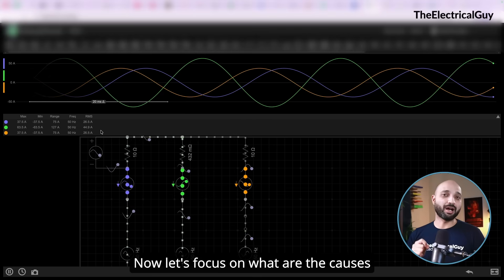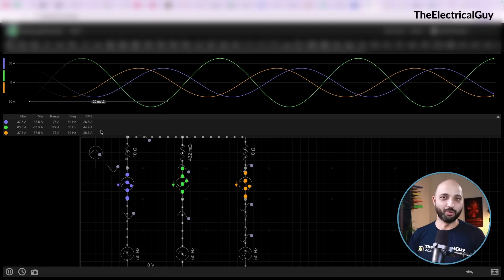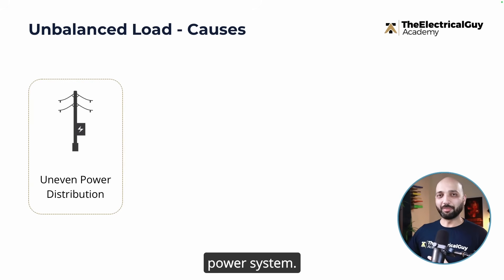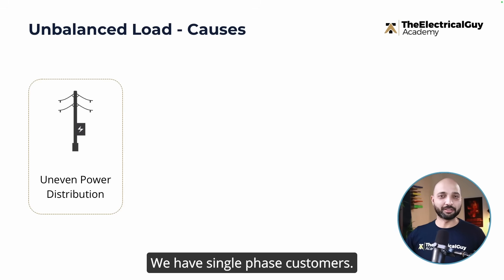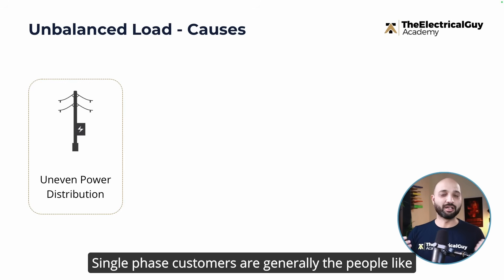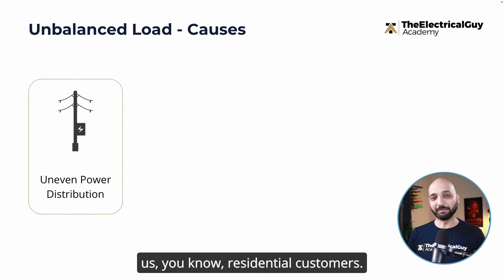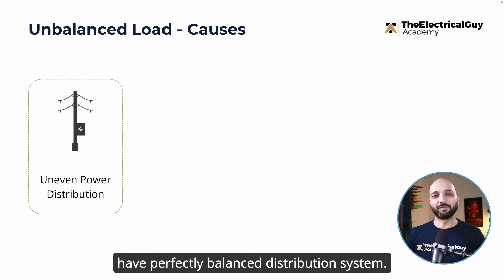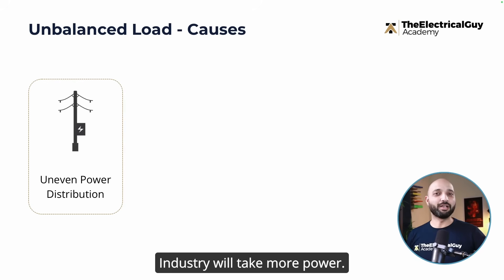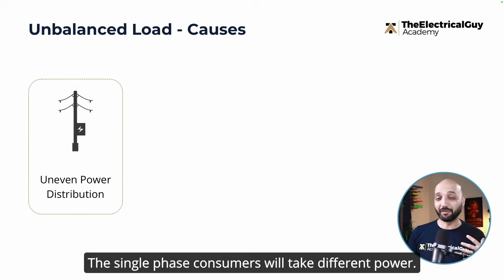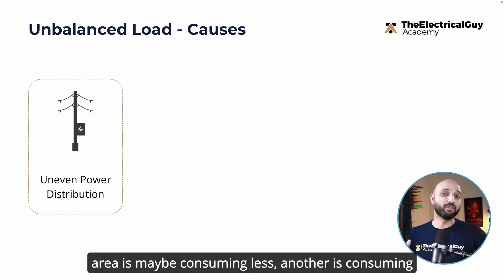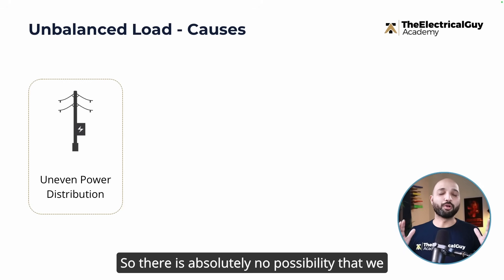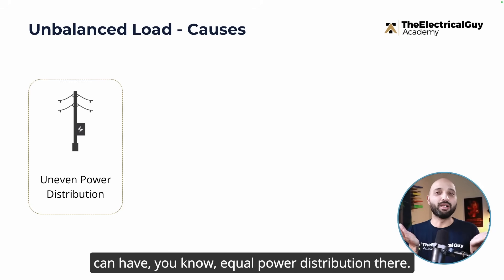Now let's focus on the causes of this load imbalance. The first is uneven power distribution. On the distribution side we have three-phase customers — generally industries — and single-phase customers, generally residential. There is absolutely no possibility of having a perfectly balanced distribution system: industries take more power, single-phase consumers take different amounts, and even within a residential area one street may consume less while another consumes more.